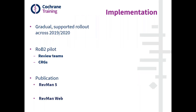RoB 2 is being implemented in Cochrane with a gradual supported rollout. We appreciate that introducing RoB 2 is a big change and there might be some teething problems, which is why it's being piloted over a longer time period. Importantly, publication of reviews using RoB 2 can't be done in RevMan 5 — it can only be done in RevMan web. Author teams can publish protocols in RevMan 5, but at some point will need to switch over to RevMan web.